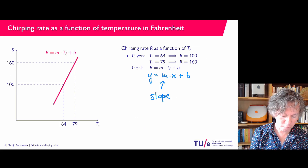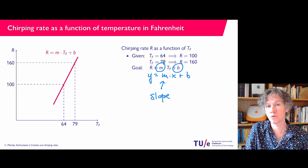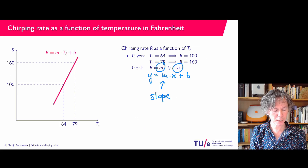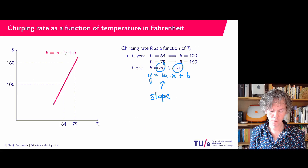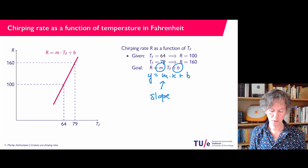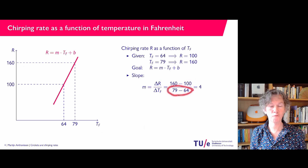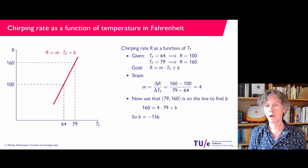So how can we find these numbers M and B? The slope, hopefully you remember, is the difference on the vertical axis (delta Y) divided by the distance on the horizontal axis (delta X). For our problem, the slope M is the difference in the chirping rates over the difference in the temperatures: (160 minus 100) in the numerator and (79 minus 64) in the denominator. This gives a nice number — you get M equals 4.